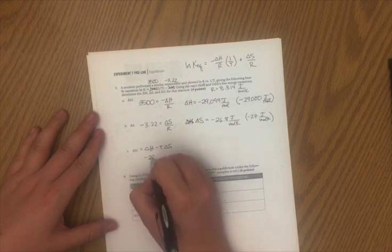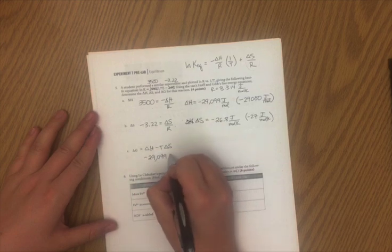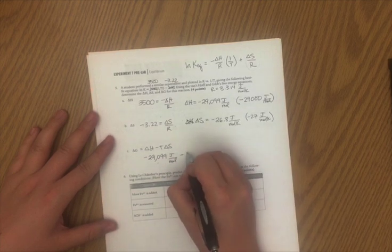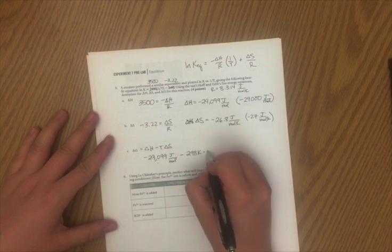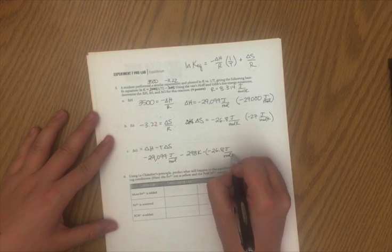So I'll have negative 29,099 joules per mole. That's my ΔH minus the temperature, 298 Kelvin, times negative 26.8 joules per mole Kelvin.